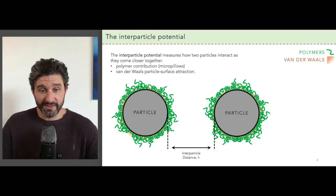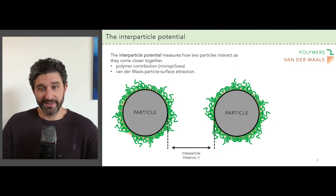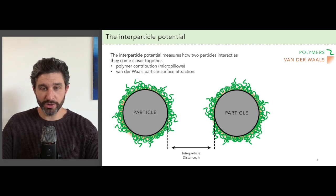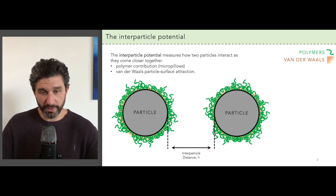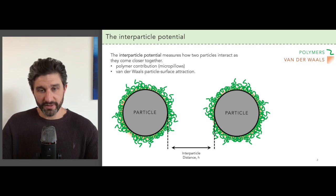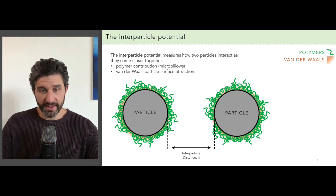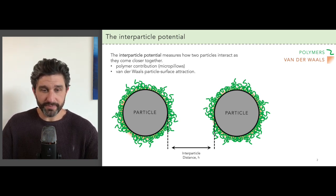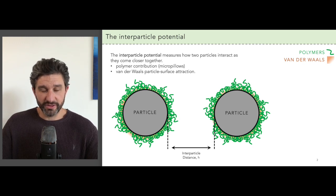To start, we need to take a detour to understand an important quantity which dictates how neutral particles interact when they're dispersed in neutral solution. This is called the interparticle potential — it's the energy of interaction between two particles based on how far apart they are. There are actually two contributions to this interparticle potential that we should consider.